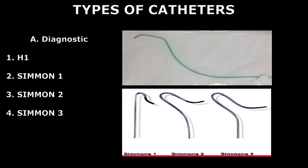There are multiple catheters, but use those with which you are familiar. These are different diagnostic and guiding catheters. Usually we use the H1 catheter for diagnostic purposes. Siemens 1, 2, and 3 catheters have different lengths of reverse curve component, with Sim 3 being the longest.